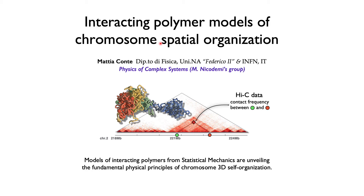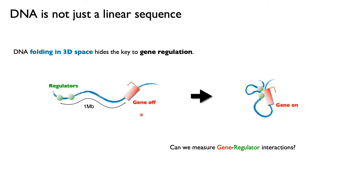In this short video I'd like to briefly discuss our recent work in polymer physics to understand the mechanisms whereby human chromosomes are folded in the nucleus of cells. What we know today is that DNA is not just a linear sequence. To understand a bit more about how chromosomes work we have to look at the way DNA is folded in 3D space, because this has been linked to a number of functional activities such as the regulation of genes.